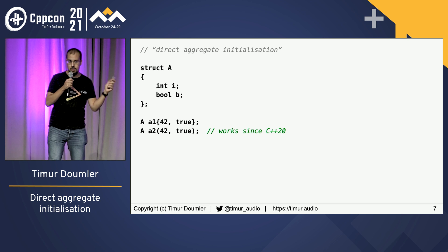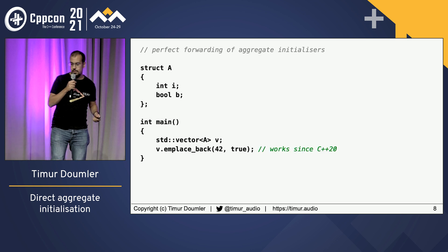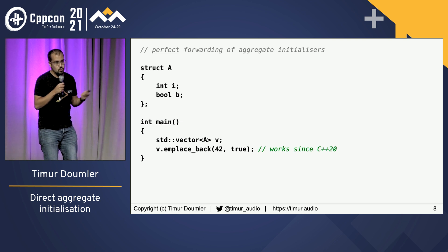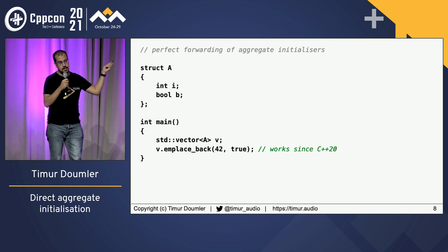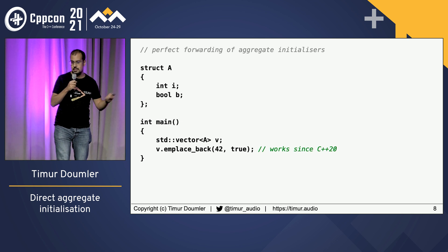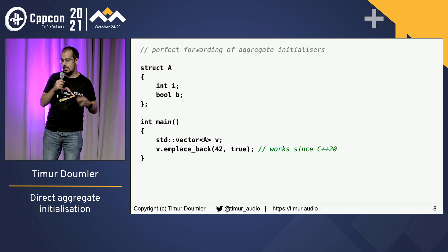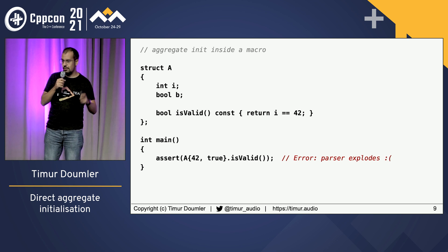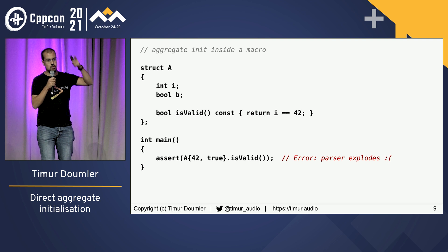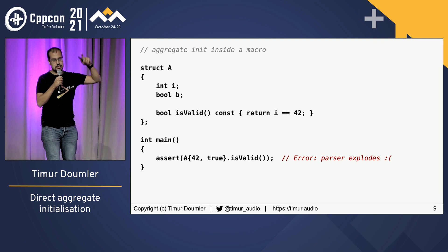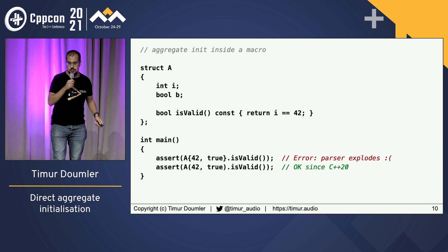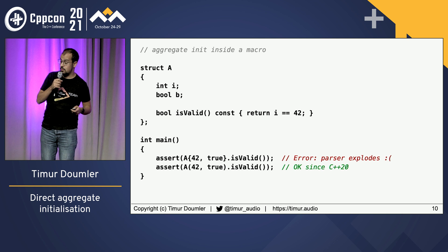Why did the committee do this? Well, it solves a few problems. It solves this one problem where you couldn't really perfect forward aggregates before C++20 — that just wasn't possible. Now you can. For example, you can implement emplace_back, so now you can emplace aggregates in C++20. The other thing you can now do, which is a bit more rare, is aggregate initialization inside a macro. Before, if you had curlies with a comma inside a macro, the parser would think that's the next macro argument and just explode. Now you can use parens, so that actually compiles and works in C++20.